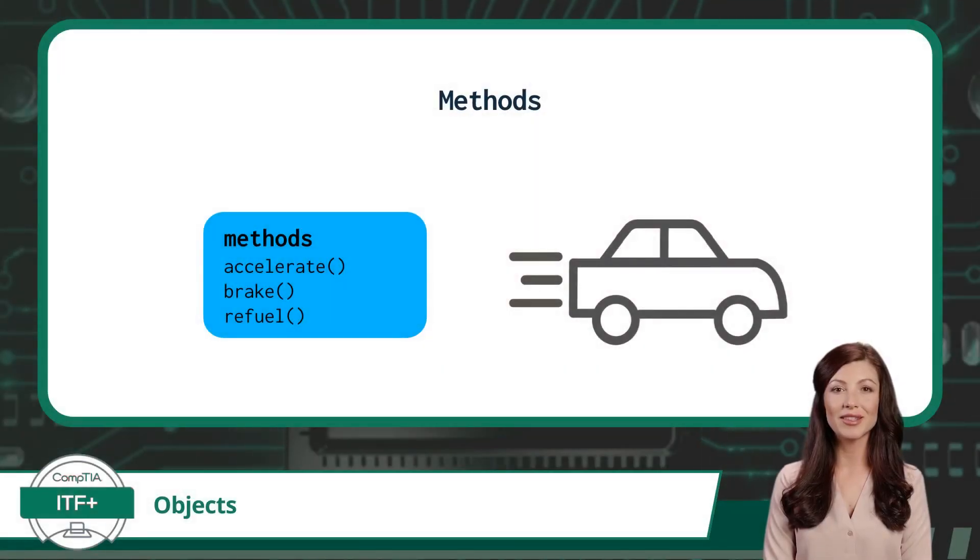And finally, let's explore object methods. Think of methods as the actions an object can perform. They're like the functions that an object knows how to execute. Referring back to our car object from earlier in this video, this object might have multiple methods, like accelerate and brake or refuel. These methods allow us to interact with the object and perform actions related to it.